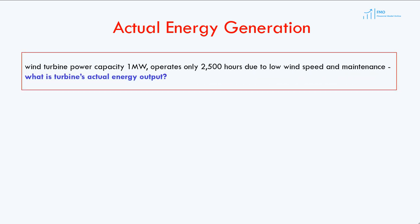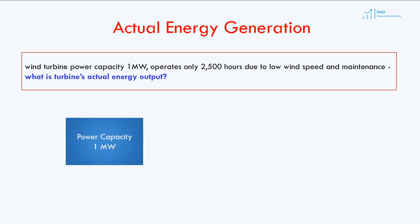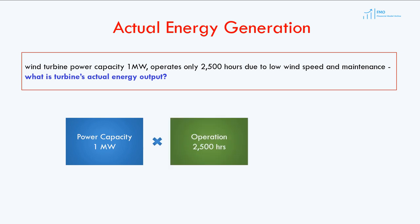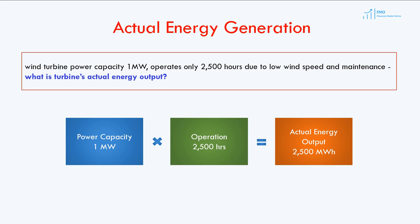Now let's take a look at another example. This time, let's assume that due to low wind speed and maintenance, the wind turbine was in operation only 2,500 hours in a year. The question is: what was the turbine's energy output? The wind turbine's power capacity is 1 megawatt. Multiplying the power capacity by the 2,500 hours the turbine operated, we get an actual energy output of 2,500 megawatt hours.